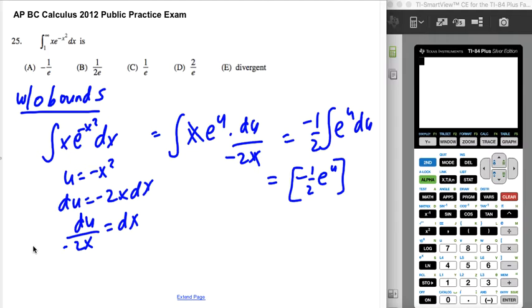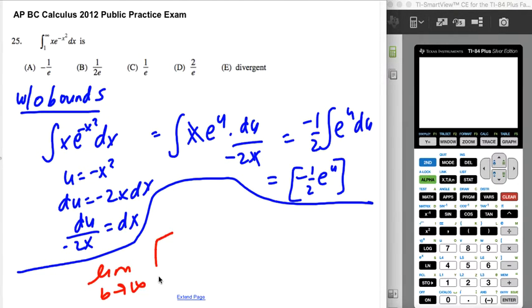So knowing that, and again you're really supposed to use limits because it's an improper integral and that's fine, but it's also multiple choice so you could be a little bit lazy about this. So I recognize that this is the limit as b approaches infinity of negative one half e to the negative x squared from 1 to b.